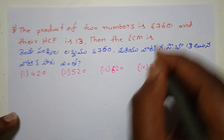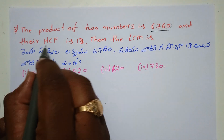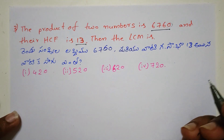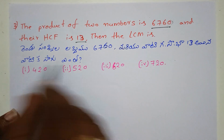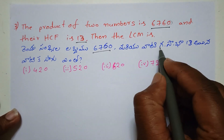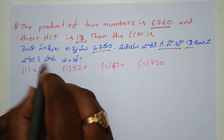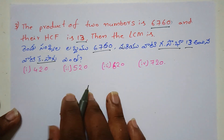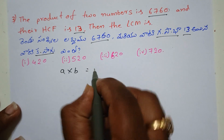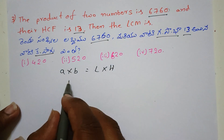If the two numbers are multiplied, HCF will be 13. I am telling you the same process: A into B equals LCM into HCF. We multiply the two numbers.